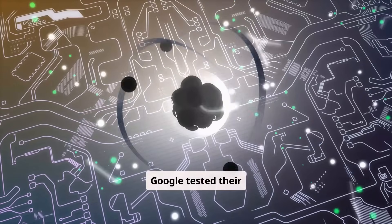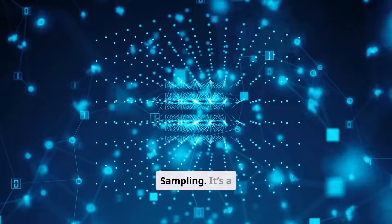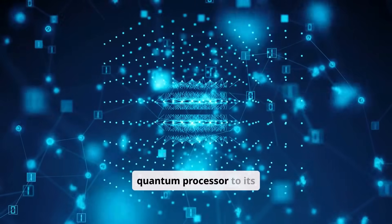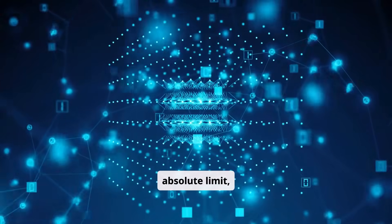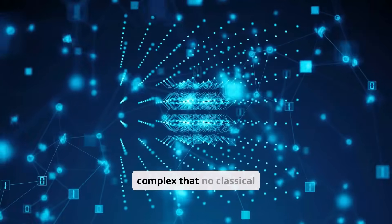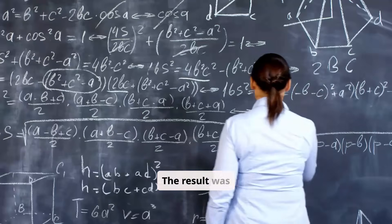Google tested their chip with a task called random circuit sampling. It's a deliberately abstract problem designed to push a quantum processor to its absolute limit, creating a computational state so complex that no classical computer could ever hope to simulate it. The result was stunning.